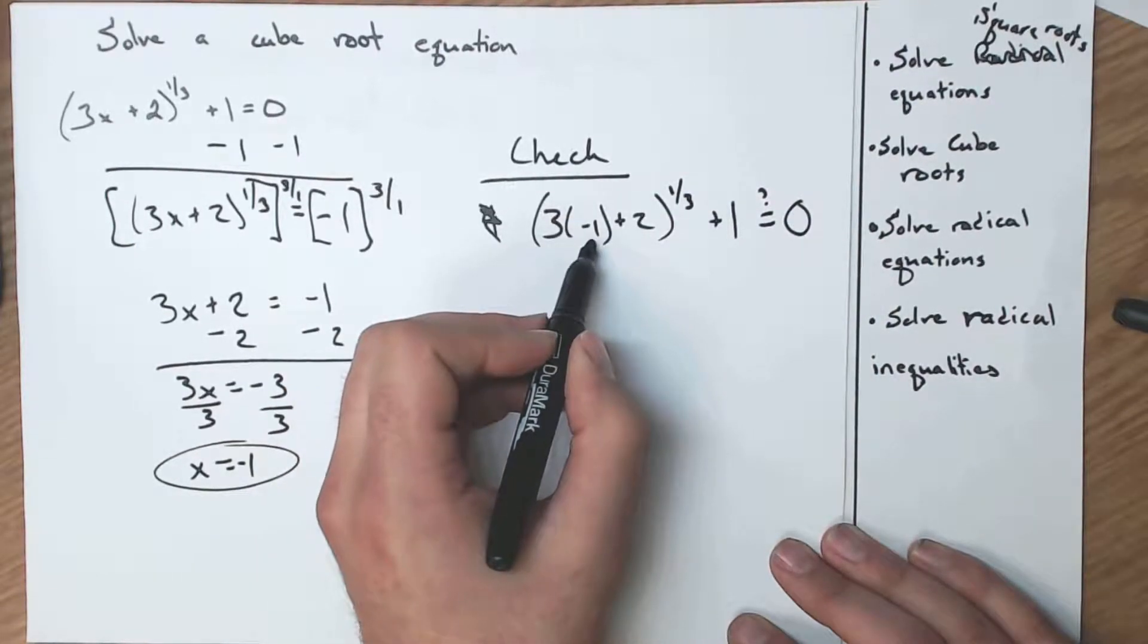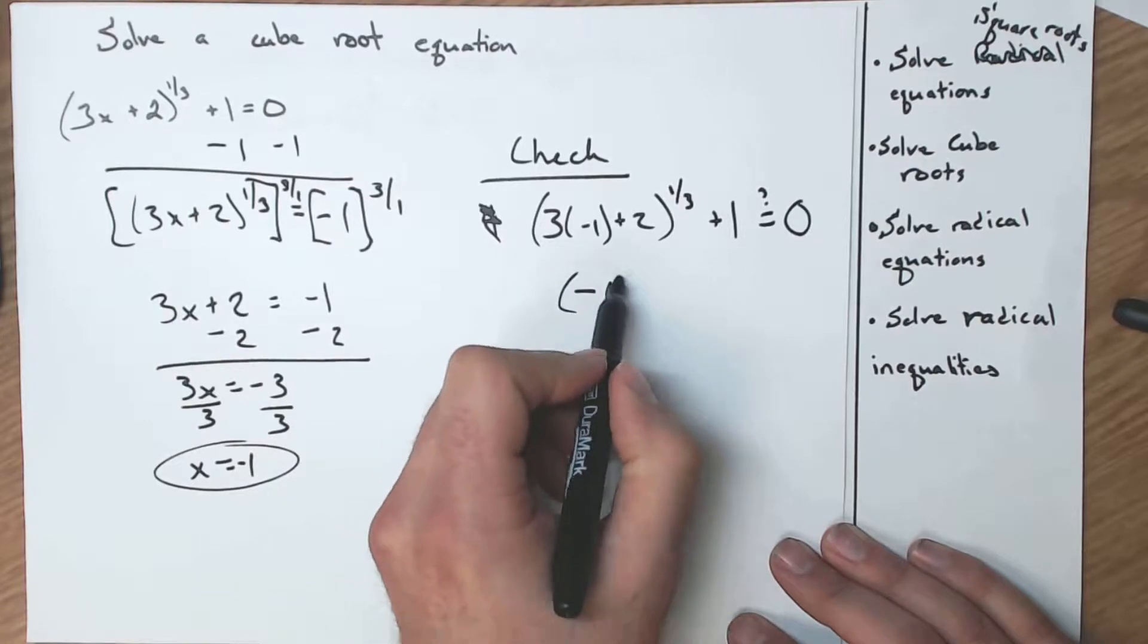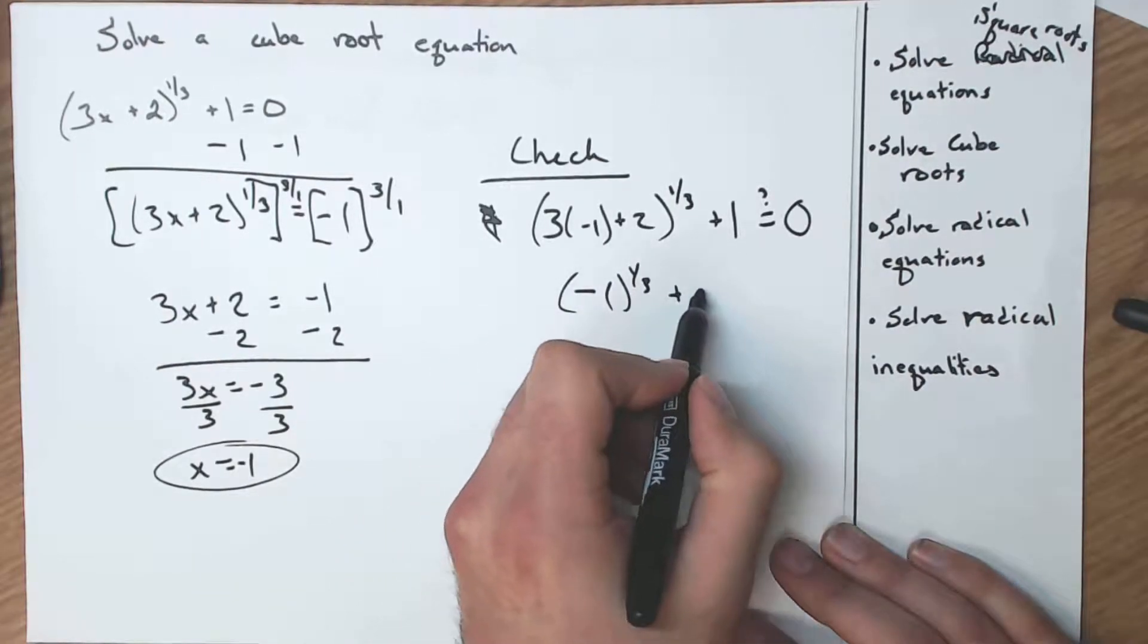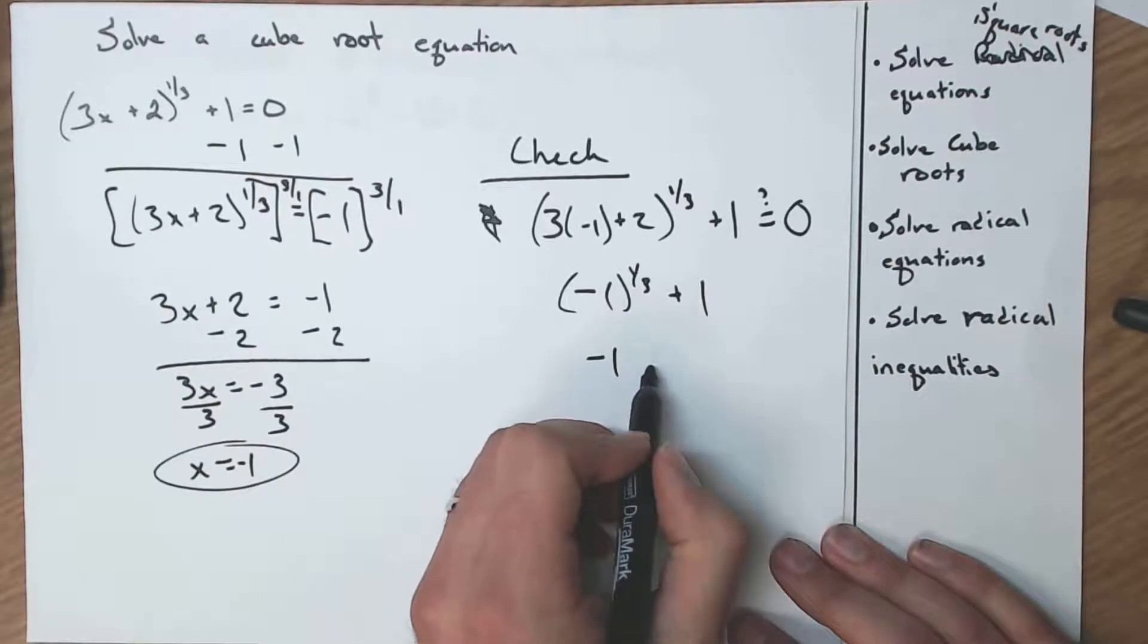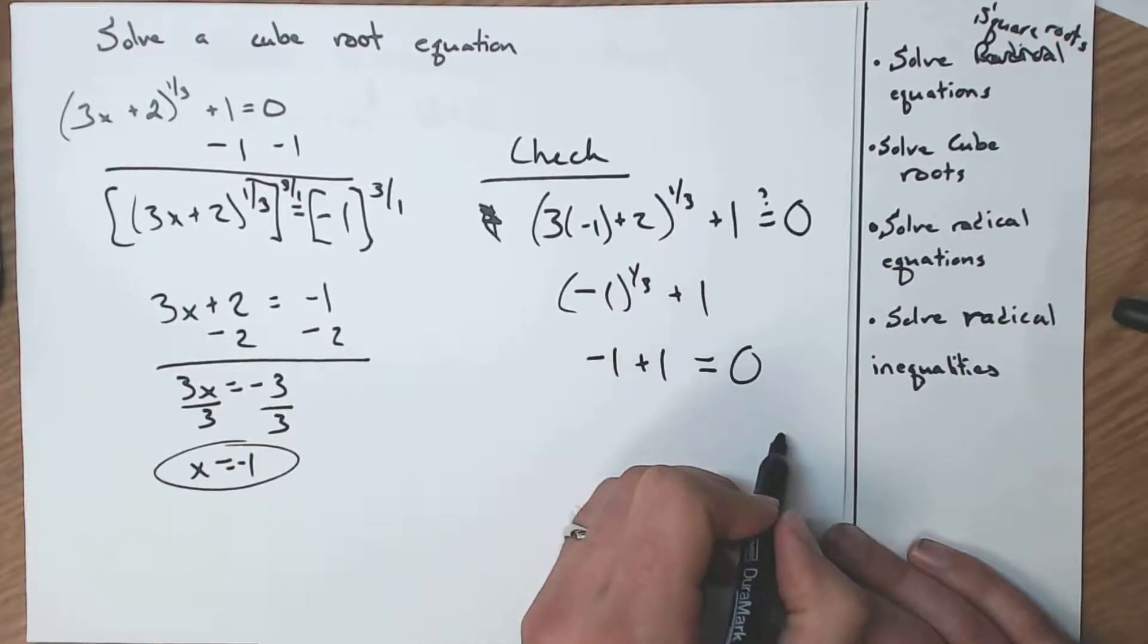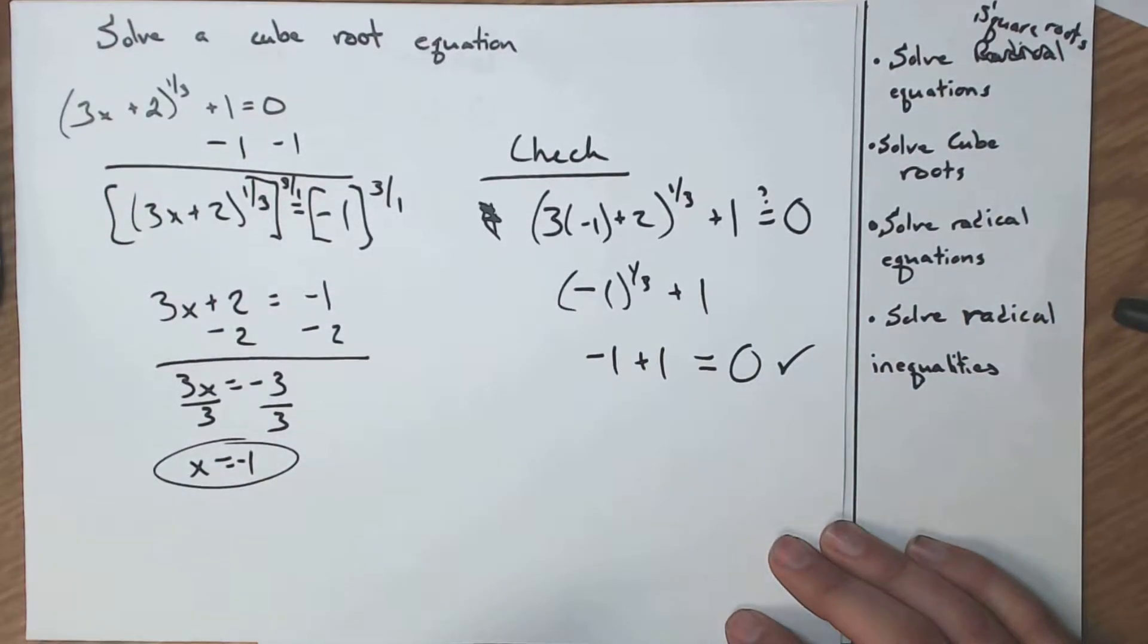3 times negative 1 is negative 3 plus 2. So that's negative 1 to the 1 third plus 1, cube root of 1, or sorry, I have a negative 1 is negative 1 plus 1. Yes, that does in fact equal 0. Awesome. Our answer works.